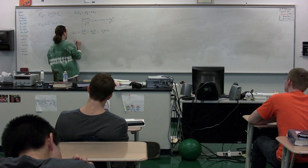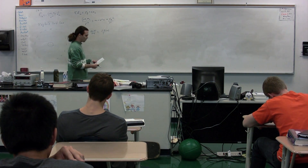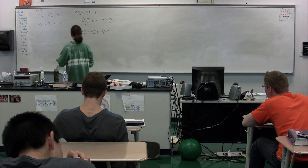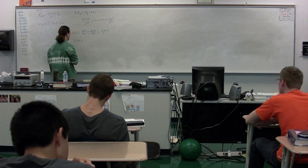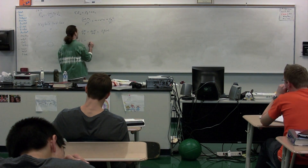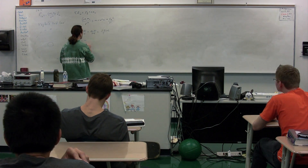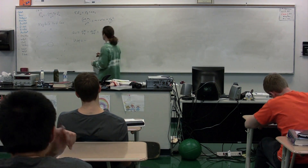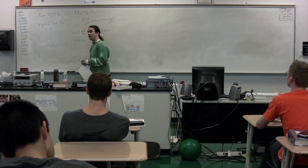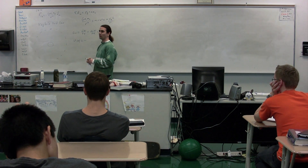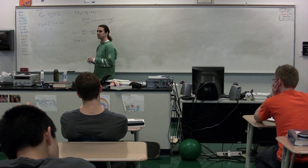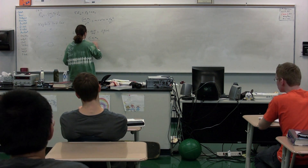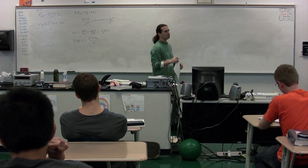We also had the universal gravitational potential energy. What is the equation for universal gravitational potential energy? The derivation starts with the negative integral of negative G, M1, M2 over r squared, and we end with the result: negative big G, M1, M2 over r.